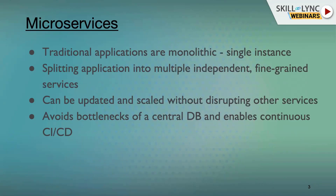Let's start with microservices. Traditionally, any applications or software used to be monolithic — a single instance of an application. A monolith application is any application that is not divided into smaller and independently deployable parts. A monolith is a big single unit; it may have distinctions like a front end or a back end, something like a UI and a database. But it would be so tightly coupled that you cannot independently deploy or separate the two. When you deploy the application, you are deploying both parts simultaneously.